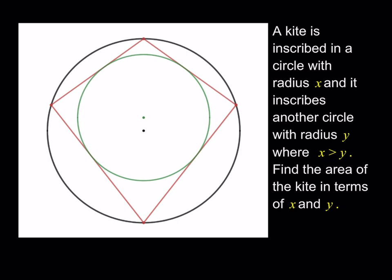Okay, so we do have a kite that is inscribed in a circle with radius x, which is the outside circle, which is the black one, and it inscribes another circle with radius y, which is the green circle, where x is greater than y. Find the area of the kite in terms of x and y.